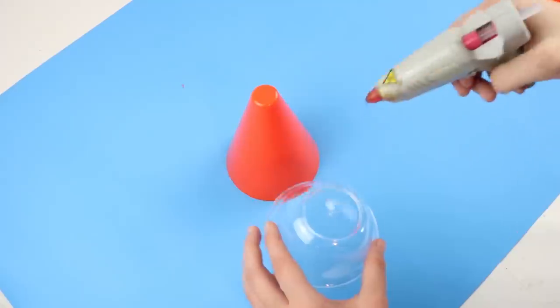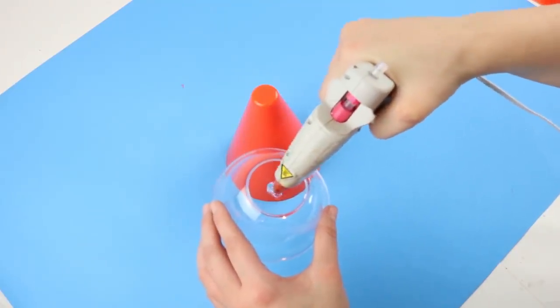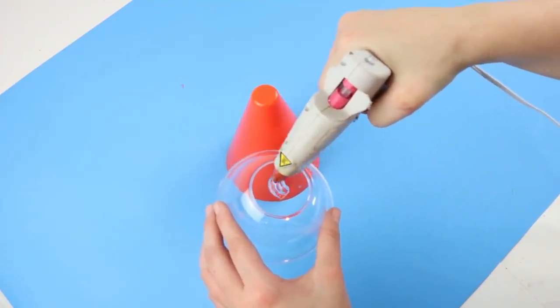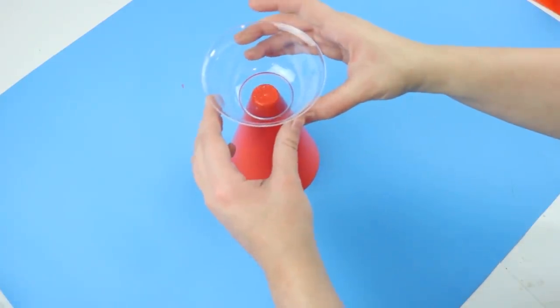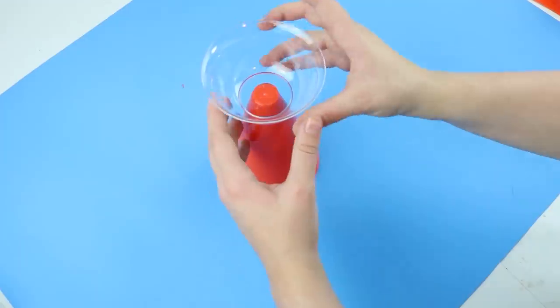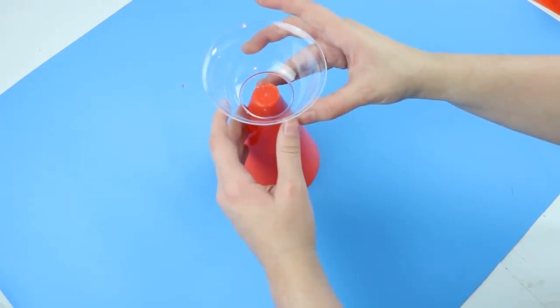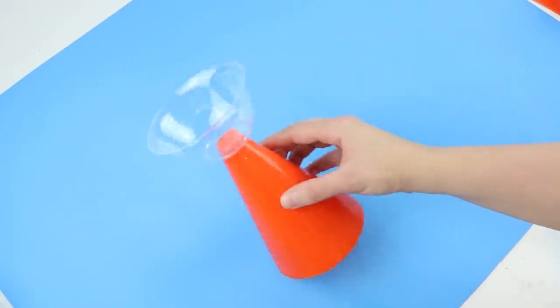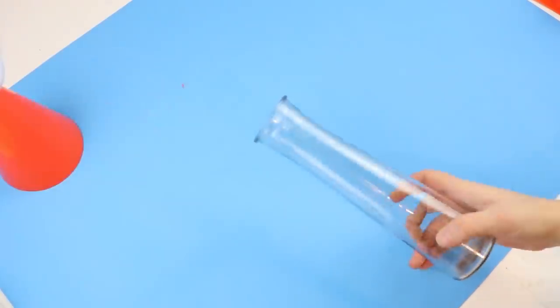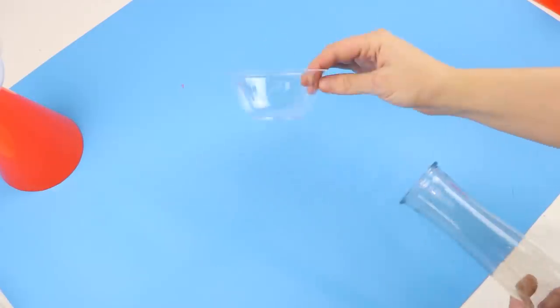I'm just going to be using hot glue to put this on. You can use E6000. I don't think that's necessary for this project just because it's not going to be holding a ton of weight, but hot glue works. I just put it on the very base of the bowl and then just made sure it was center. It's clear, so it's pretty easy to make sure it's center. And then I just put it on top.